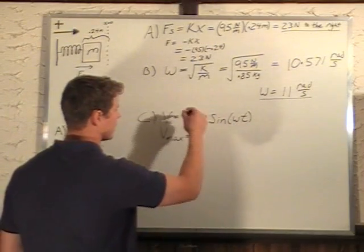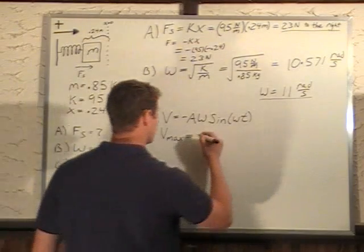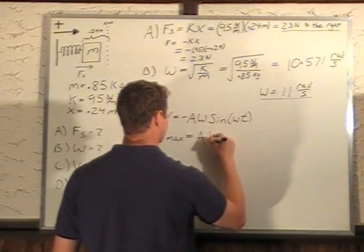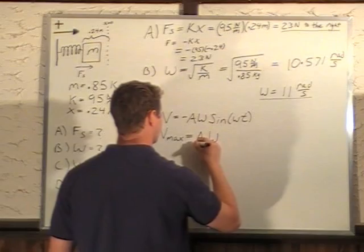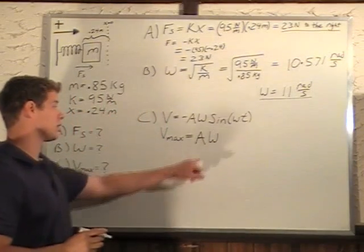So it's going to be a maximum when this sine omega t value is negative 1. So that negative cancels with this one. We don't really care what that is. We just know that it will be negative 1 at some point. So our maximum is going to be A omega.